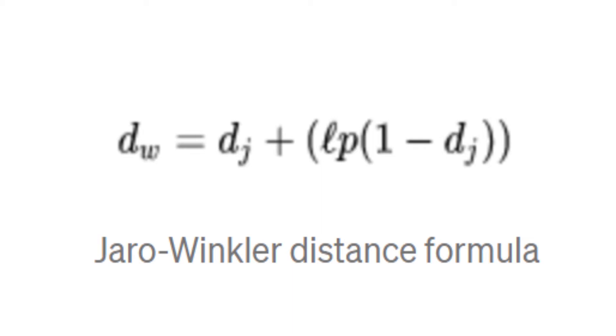Once you've found the Jaro distance, you have to find the Jaro-Winkler distance. What the Jaro-Winkler distance does is improve the score of similarity based on how similar the prefixes are. So if you take the words 'pump' and 'pumpkin', they share a prefix of four letters, so the Jaro-Winkler distance increases the value of similarity by that common prefix.